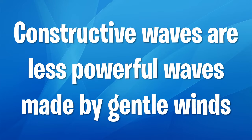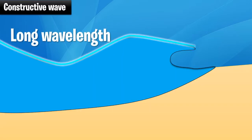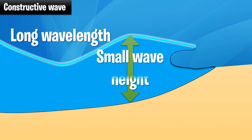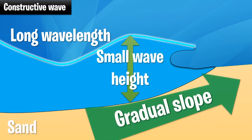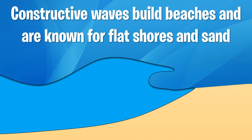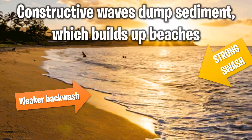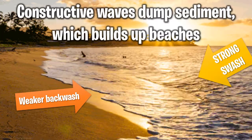Constructive waves are less powerful waves made by gentle winds. They do not have a high wave height or a high wavelength. They are known for a long wavelength, small wave height, a gradual slope, and sand — low energy in the water. Constructive waves build beaches and are known for flat shores and sand. Every time a wave comes in it brings sediment, and the backwash only takes a little bit back — you can see how that continued added effect creates a beach.